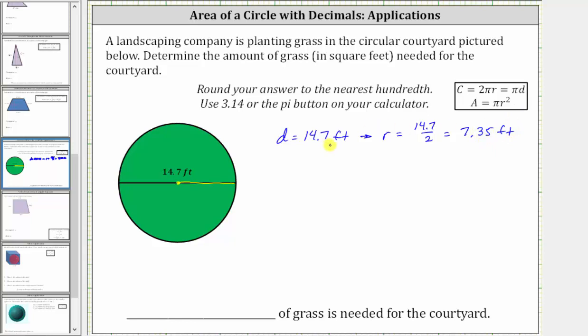And now that we have the radius, we can determine the area of the circle, which will give us the amount of grass in square feet needed for the courtyard.